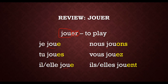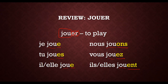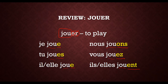We add our endings: for je, the ending is -e; for tu, -es; il and elle, -e; nous, jouons with the -ons; vous, jouez with the -ez; and ils/elles, jouent with -ent. Remember, the forms inside the boot all sound the same — the only endings we actually hear are the -ons and the -ez.